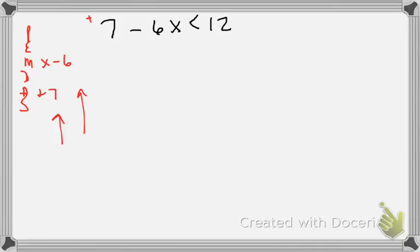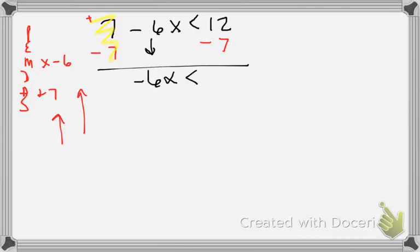I'm going to do the opposite, going this way. Instead of plus seven, I'm going to subtract seven from both sides. This becomes a zero pair — the numbers are the same but opposite. I bring down my negative six X and my less than symbol. Now twelve is positive and seven is negative, so they're different, meaning I subtract them. That gives me positive five. So I have negative six X is less than five.